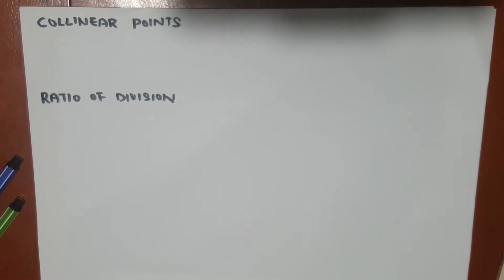Talking about collinear points and ratio of division, let us focus on the first part first. Collinear means that the points are on the same line.